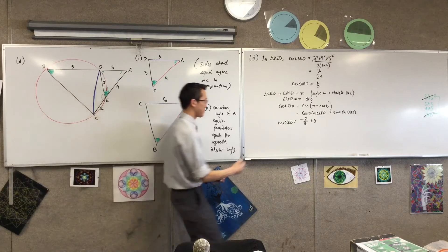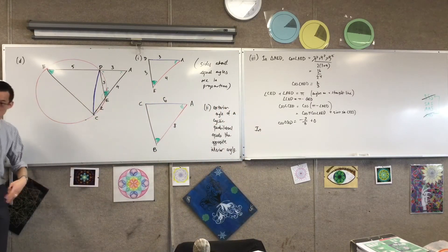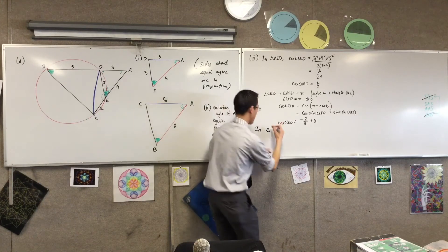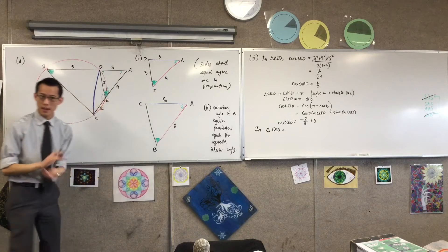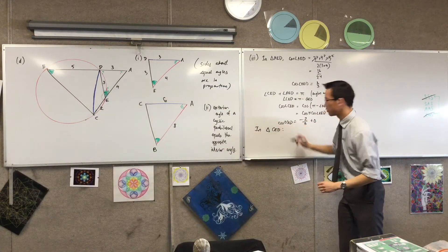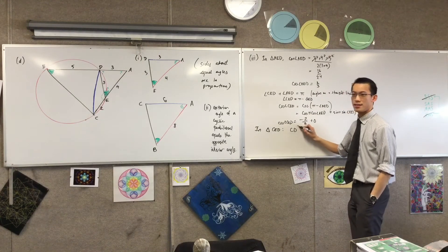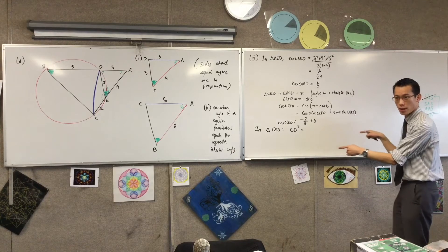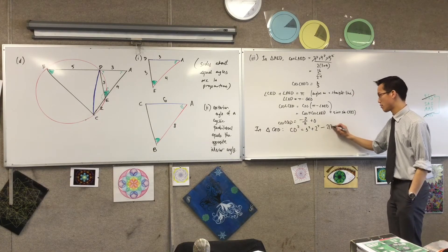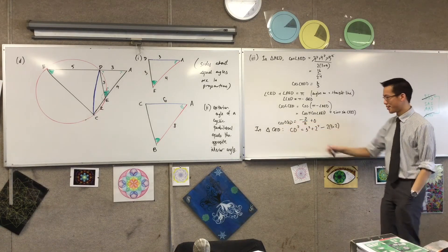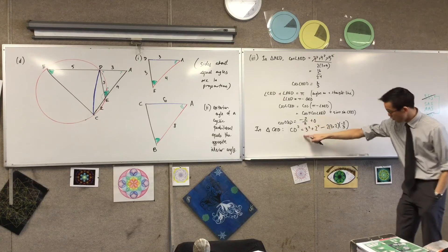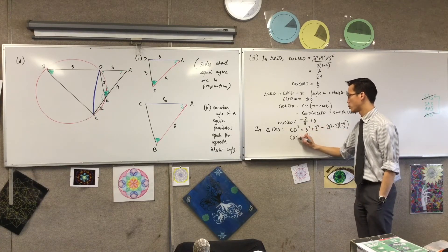So now I've got cos(CED) = −2/3, which I'm going to invoke when I do the cosine rule in the actual triangle I'm interested in. I'm changing triangles now — using the cosine rule in this left-hand, thinner triangle. In triangle CED, I'm after CD. So I write: CD² = 3² + 2² − 2 × 3 × 2 × cos(CED), and cos(CED) is −2/3. Crunching the numbers, you get 21 on the right-hand side, and of course we only want the positive value — so CD = √21.